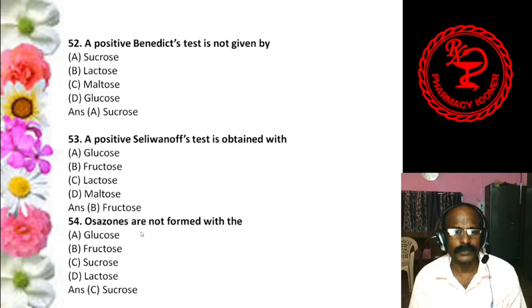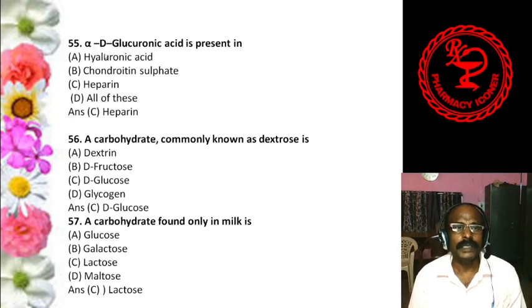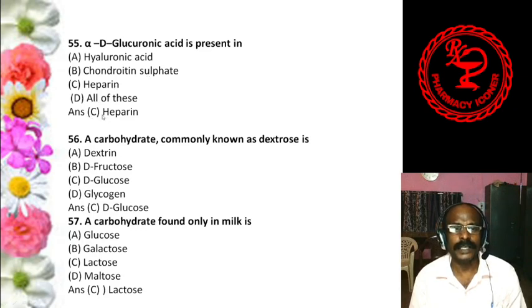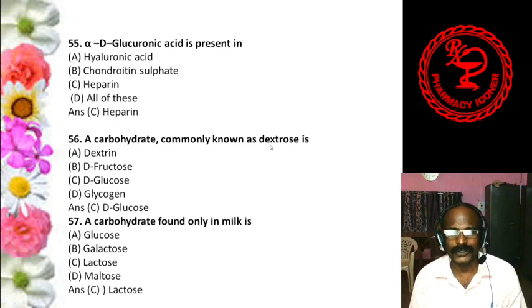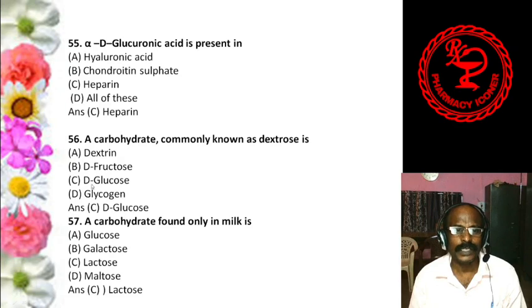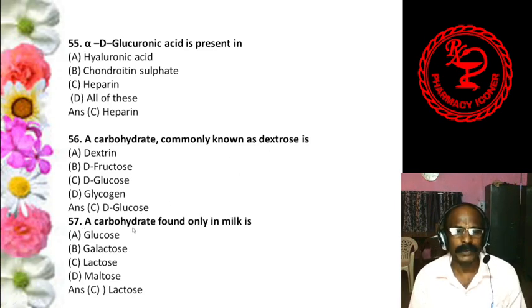Question 15: Which of the following hexoses is found in seminal fluid and provides energy to the sperms? Options: A. Glucose, B. D-fructose, C. Dihydroxyacetone, D. D-mannose. The answer is B, D-fructose. D-fructose is present in the brain and in different tissues, and seminal fluid contains D-fructose.